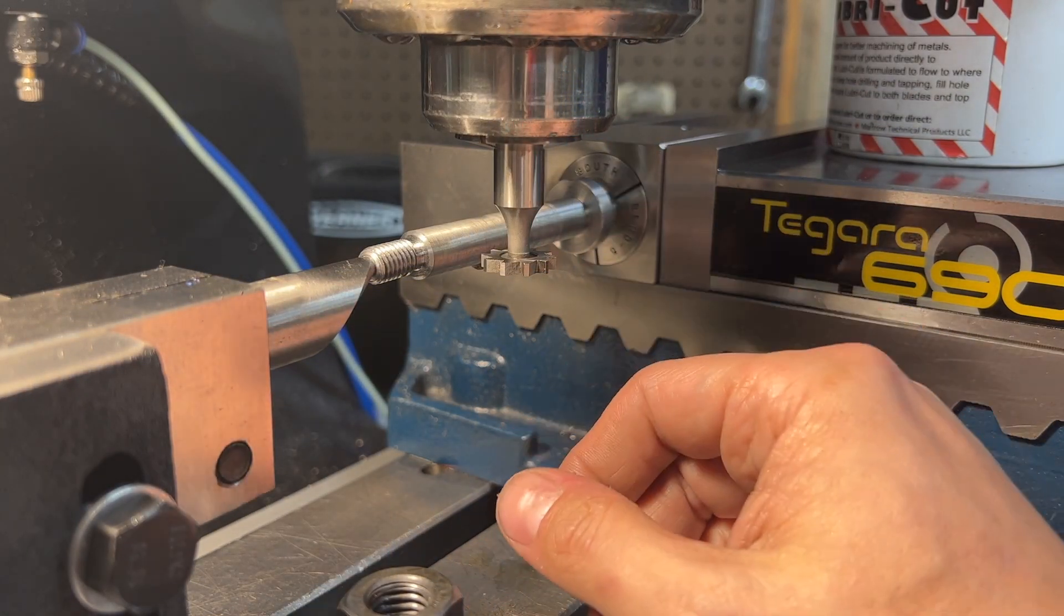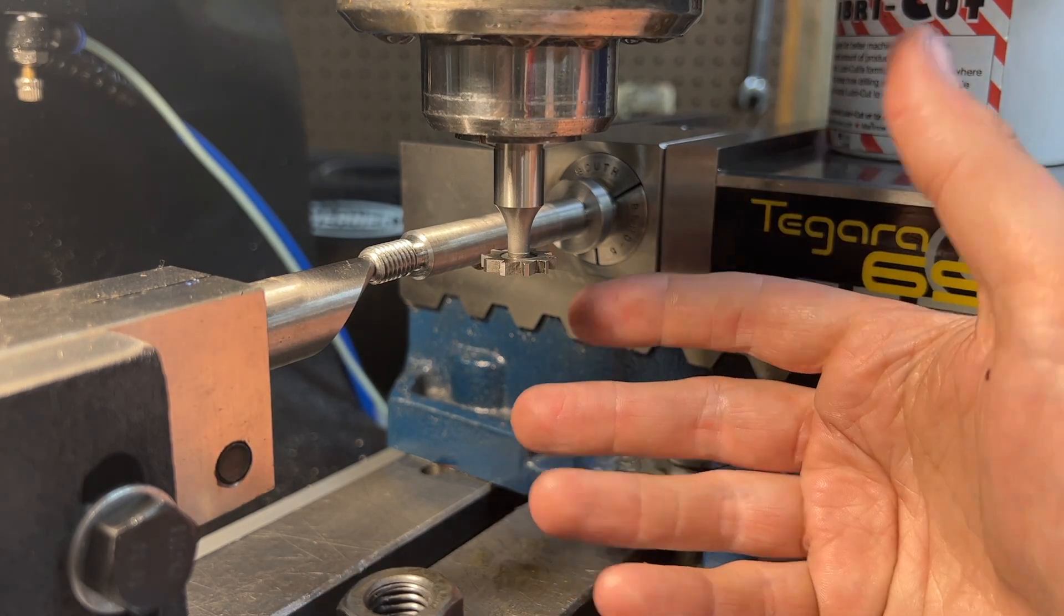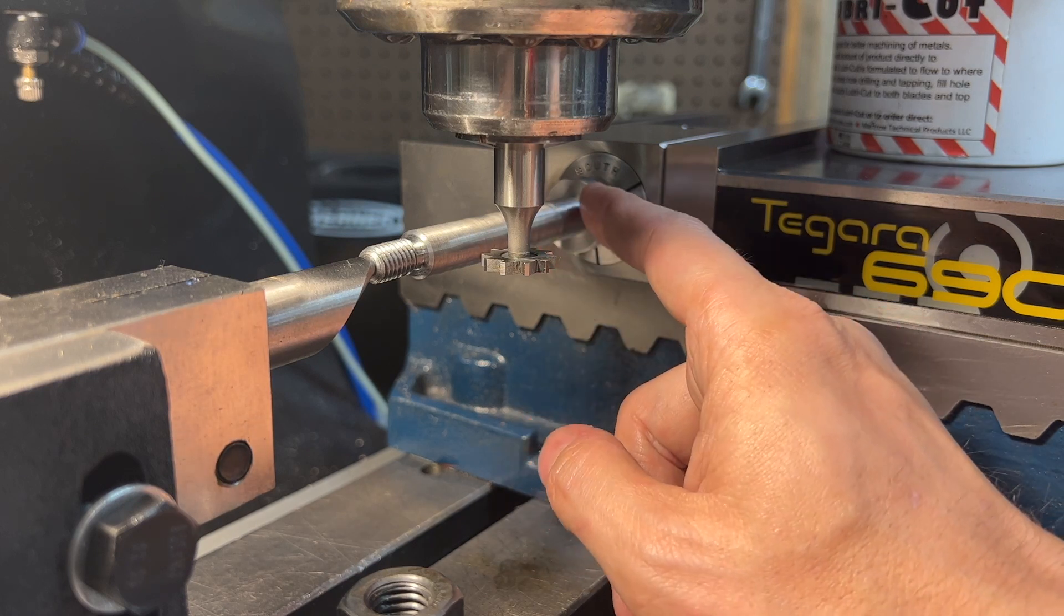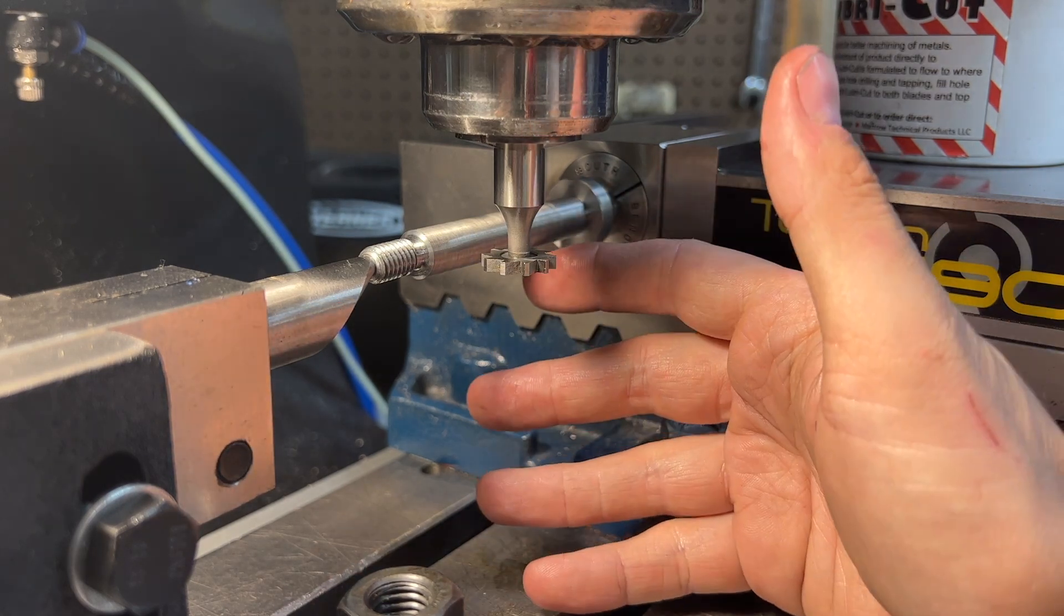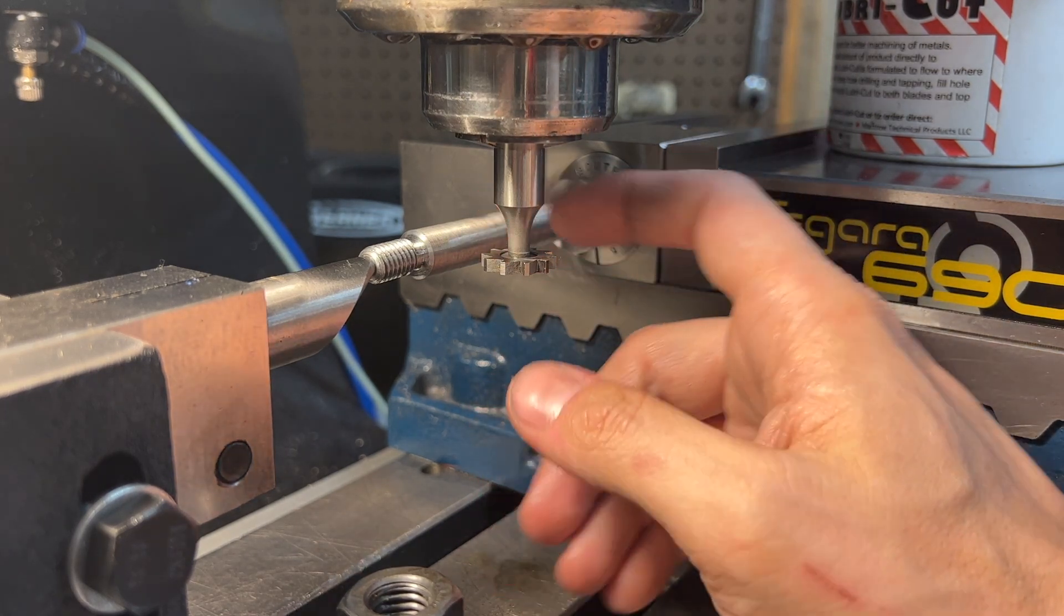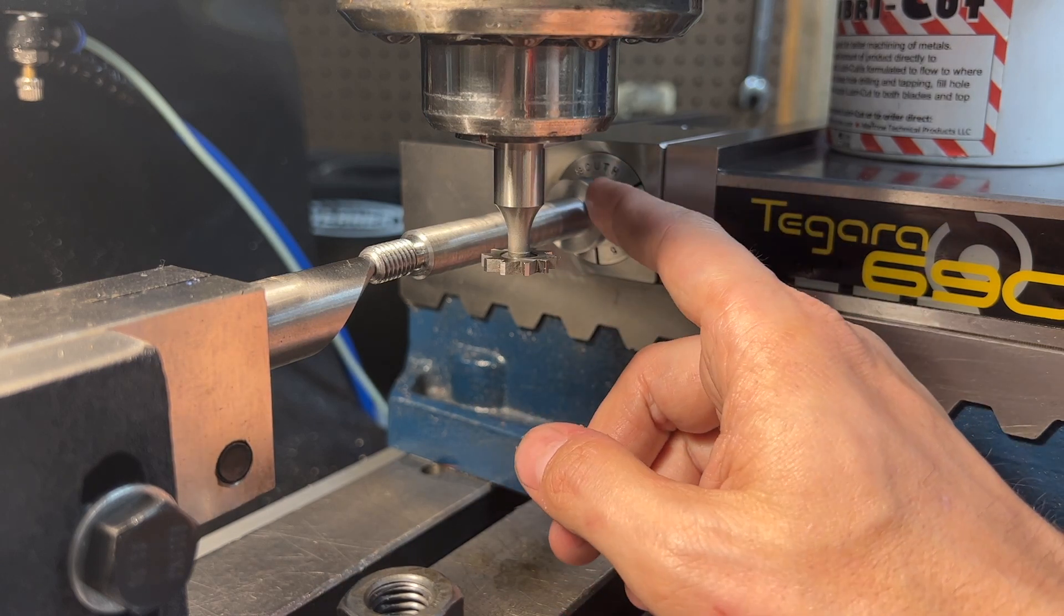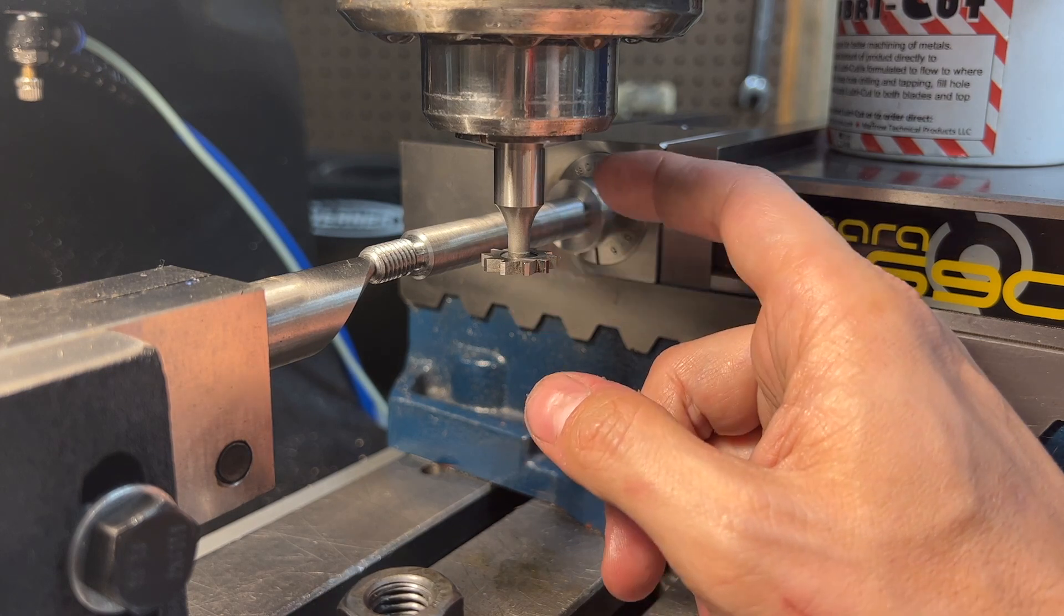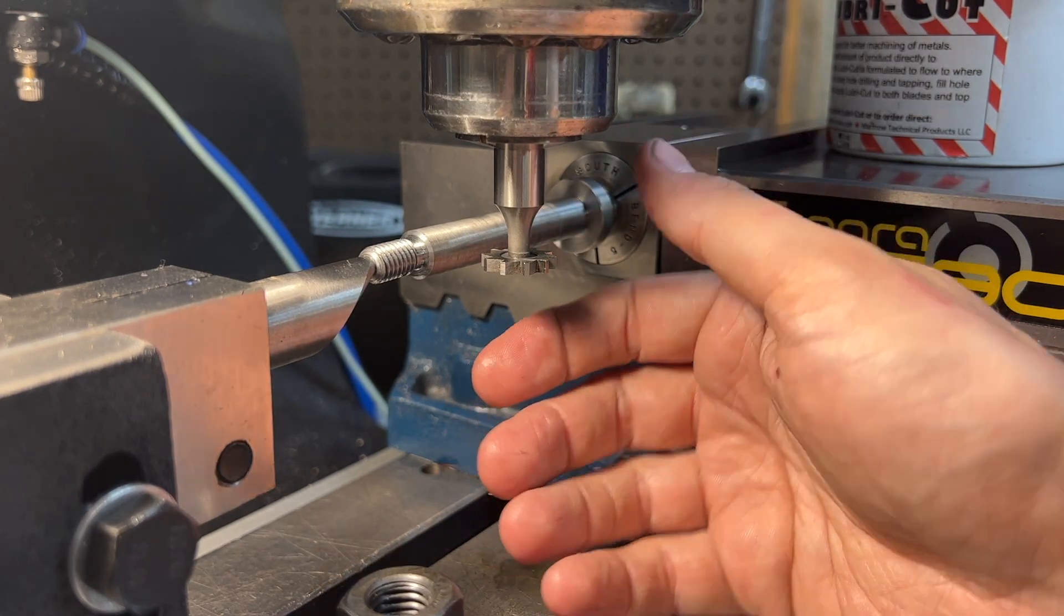This is one of those features where the setup takes a thousand times longer than the operation. We used our edge finder to touch off of this shoulder because the drawing locates the center of this key seat based on its distance from that shoulder. So we just touched off, moved to the relevant location, and then locked down the X axis.